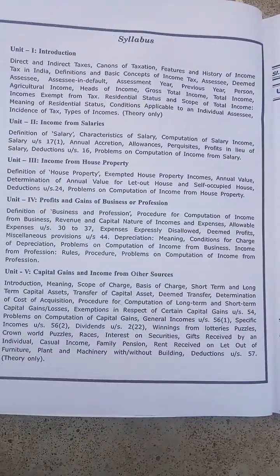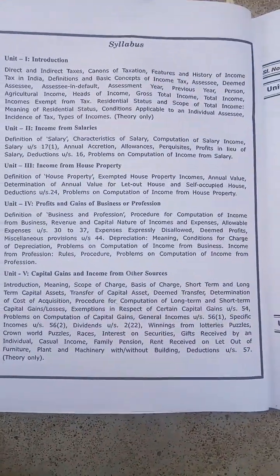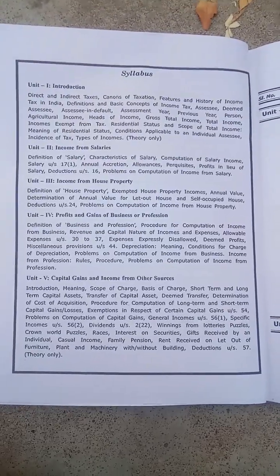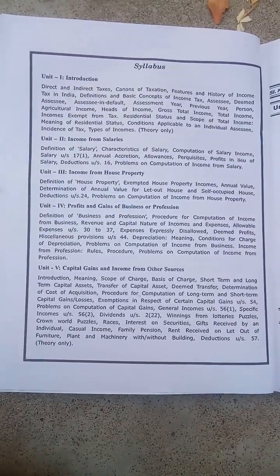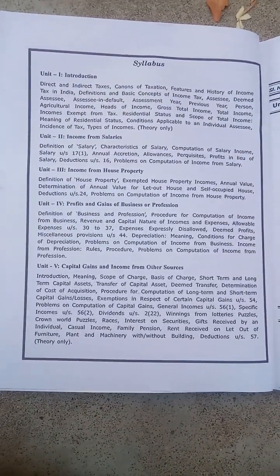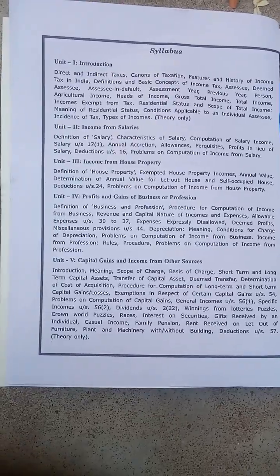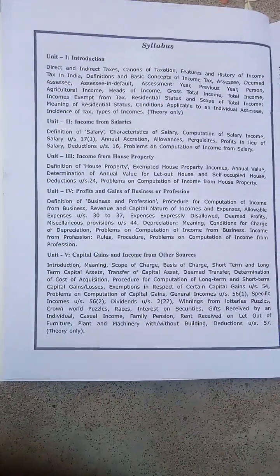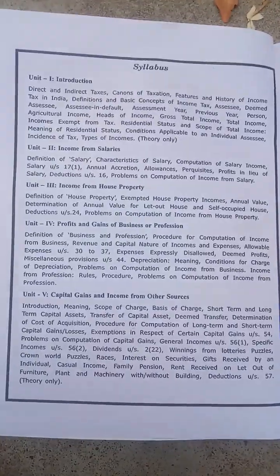Unit 1 is introduction. Unit 2 covers income from salaries. The next unit covers income from house property, then profits and gains of business or profession, followed by capital gains and income from other sources.